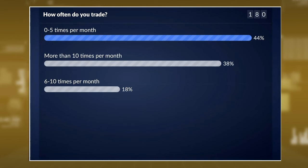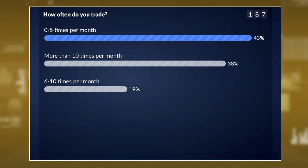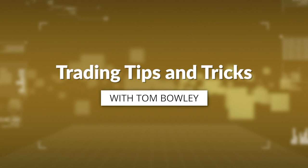Zero to five times per month is 44% — the majority of those responding actually trade relatively few times during the month. But right on their heels, 38% trade more than 10 times a month, and 19% trade six to ten times a month. So more than half of you trade at least six times a month — more than once a week. Erin is probably in the zero to five per month category — that's correct, 43%. Everybody has their own style. I hold my positions a lot longer; typically zero to five times per month for some, while I hold mine about as long as I can hold my breath.